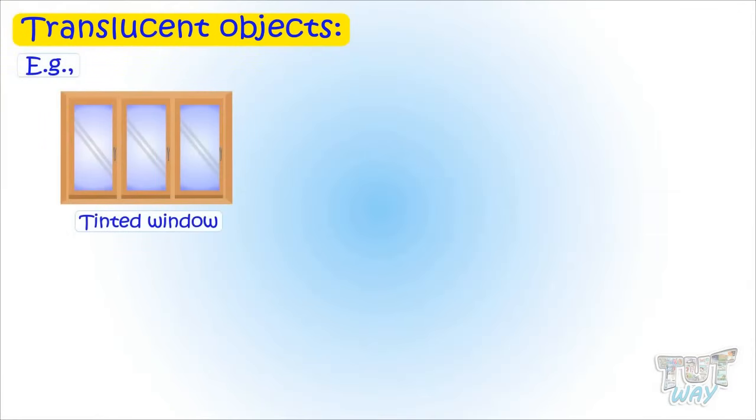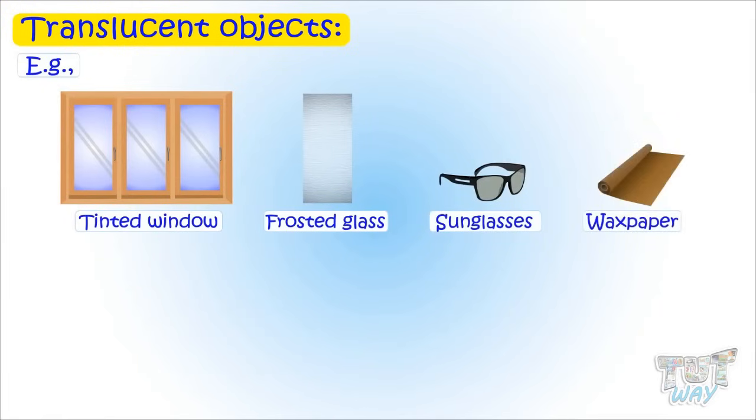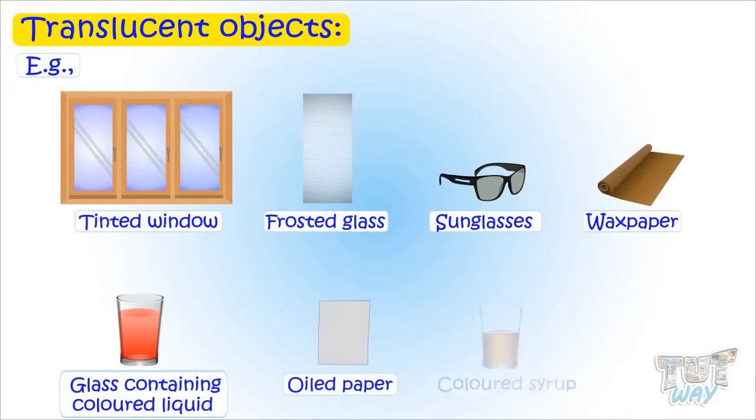Tinted windows, frosted glass, sunglasses, wax papers, color liquids in a glass, oiled papers, colored syrups, and certain stones are examples of translucent objects.